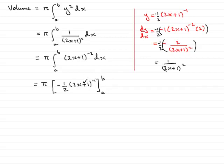Now before we move on any further, I'm going to clean this up. (2x plus 1) to the minus 1 is 1 over (2x plus 1). I'm also going to put the minus a half out the front, so I would have minus pi over 2, and then this would be 1 over 2x plus 1, between the limits a to b.